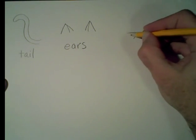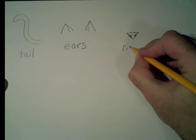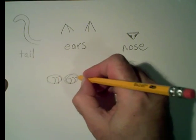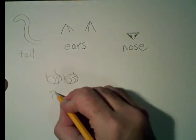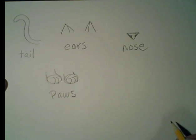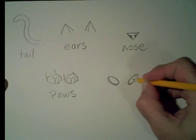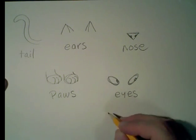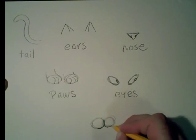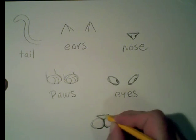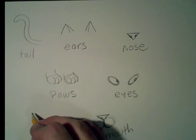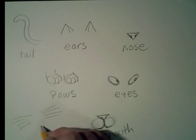They've got a tail. They have ears. They have a triangle nose. They have paws. And eyes — just think about it. And a mouth. Look at those little balls for the mouth. And they have whiskers.